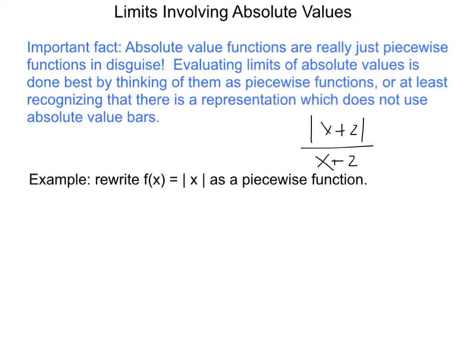We effectively need some way to get rid of absolute value bars so that we can work with it. As a first example, I want us to think about how you can rewrite this as a piecewise function. Even think about the graph of the absolute value of x for a minute — that thing clearly has two parts.